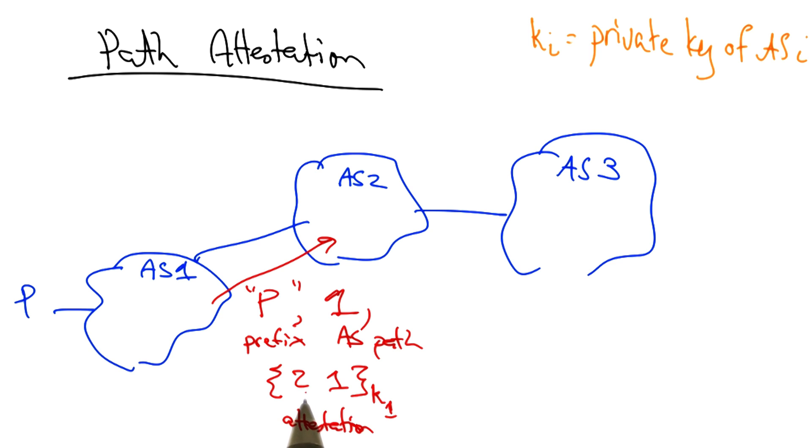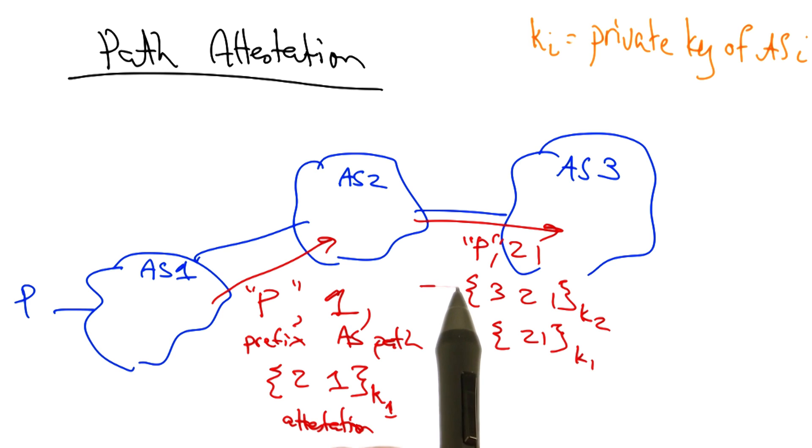Which is actually the path to one signed by the private key of AS one. When AS two re-advertises that route announcement, it of course advertises the new AS path, two, one. It adds its own route attestation, three, two, one, signed by its own private key. And it also includes the original path attestation signed by AS one.